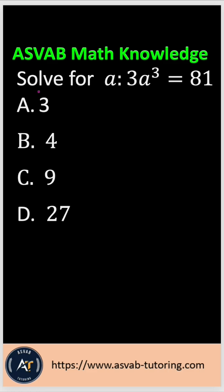The question asks: solve for a where 3a³ = 81. In order to solve this problem, let me write that down. That gives you 3a³ = 81.